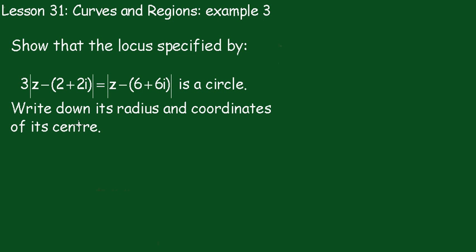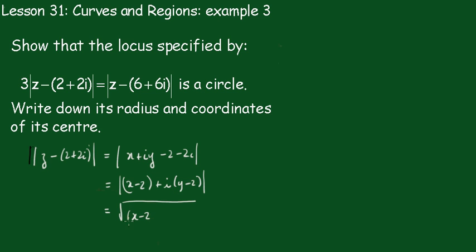This is purely algebraic, so let's have a look at what's inside. Let's start off with z minus 2 plus 2i equals x plus iy minus 2 minus 2i, and that's equal to x minus 2 plus i times y minus 2, so that's equal to the square root of x minus 2 all squared plus y minus 2 all squared.